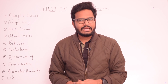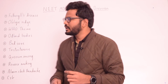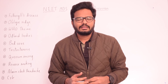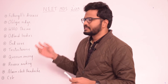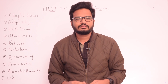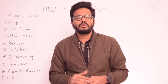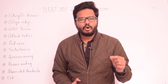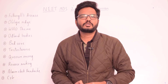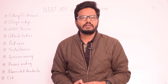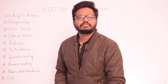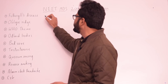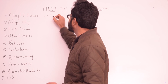Starting with Fothergill's disease: Fothergill's disease is the other name for trigeminal neuralgia, as we all know. It was named after John Fothergill, who gave the first elaborate and written description of trigeminal neuralgia way back in 1773. So Fothergill's disease is the other name for trigeminal neuralgia.